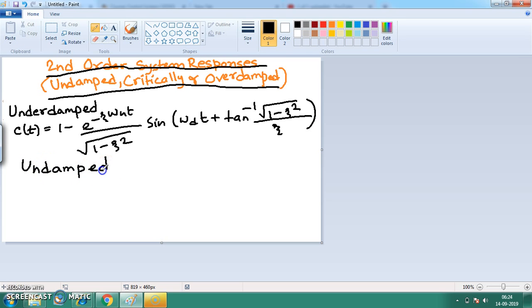We know in undamped response, the value of zeta is equal to zero. So here this zeta will be equal to zero, and we know if it is zero, it becomes infinity. So tan inverse infinity means 90 degrees, which is basically pi by 2.